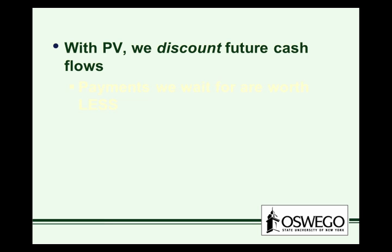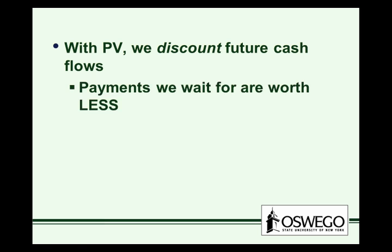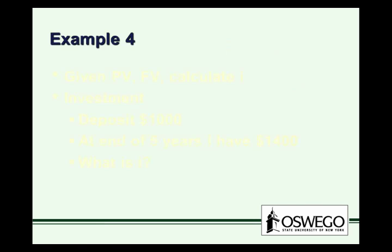Which is why I, that interest rate, is often referred to as a discount rate. And that discount rate implies that payments we wait for are worth less. Because I have to wait two years for the $5,000, it's not worth $5,000 today. It's worth something less. How much less is going to depend on how long I'm waiting for it and what the going interest rate is going to be.